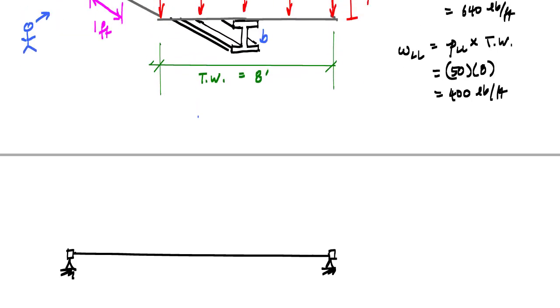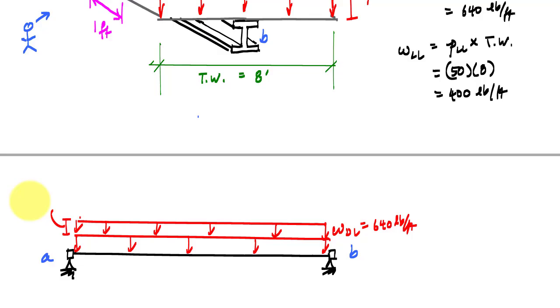And if I'm an observer over here looking this way at my beam, I would see a simple 2D model that might look like this. Here this would be end A, here's end B, and because my tributary width is uniform, my distributed loads are also uniform. I would have a distributed dead load and a distributed live load.